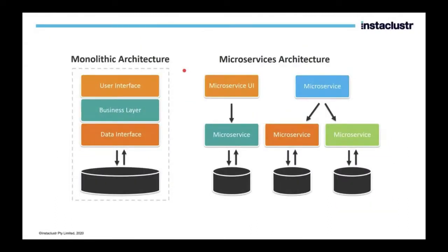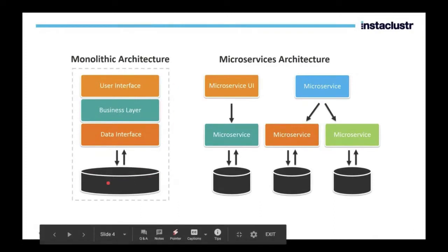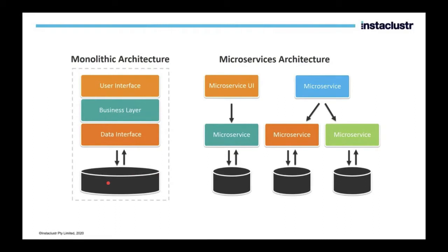Comparison with monolithic architecture: it used to have a single data store, usually a mainframe system or a relational database. The user interface, business layer, and data interface are all tightly integrated with each other. Any change in any part of the architecture will impact a large area, and any change in the data model will also impact the complete application. That was the main disadvantage of monolithic architecture — it makes things very hard to scale or change.